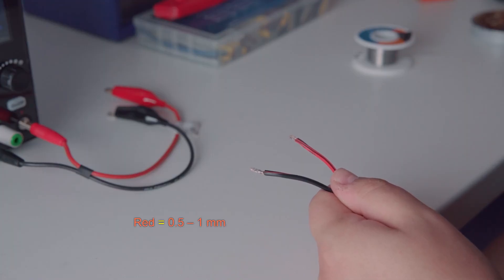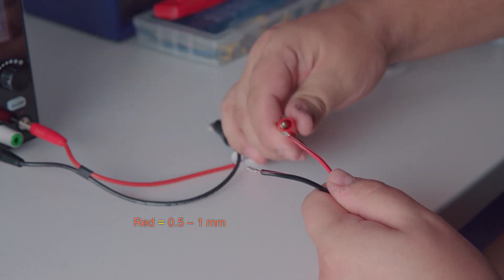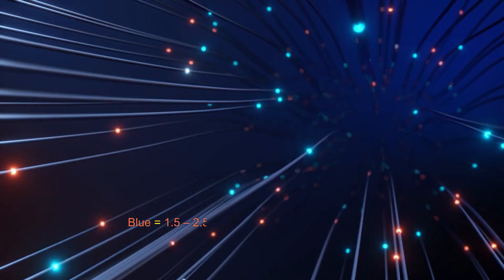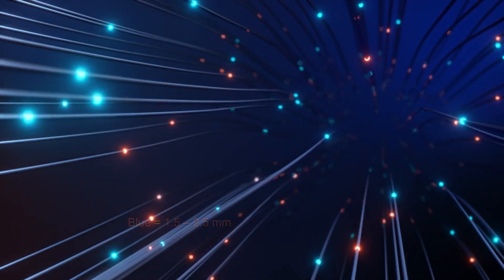Red: 2.5-6 mm². Blue: 1.5-2.5 mm². Yellow: 4-6 mm².